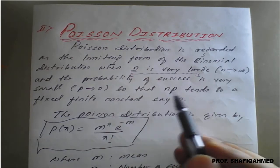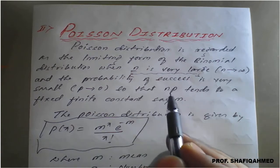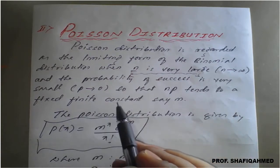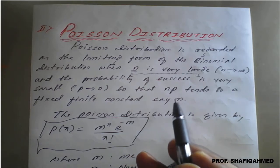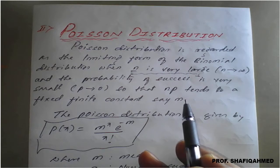So that NP tends to - NP stands for mean here - tends to a fixed finite constant, say m. So m belongs to what here? The mean of the given Poisson distribution.